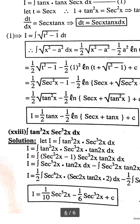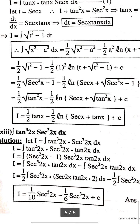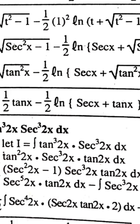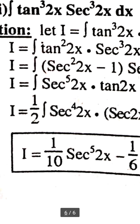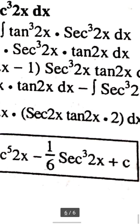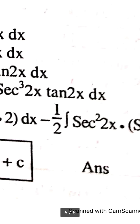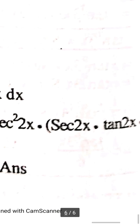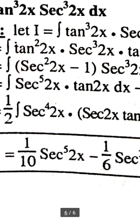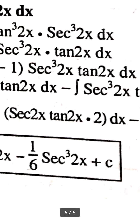Number 23: integration of tan³(2x) · sec³(2x) dx. We break sec³(2x) as sec²(2x) · sec(2x) · tan(2x). Using tan²(2x) = sec²(2x) − 1 and multiplying through, we get integration of sec⁵(2x) · tan(2x) dx plus integration of sec³(2x) · tan(2x) dx. Let u = sec(2x). The answer is (1/10)sec⁵(2x) − (1/6)sec³(2x) + C.